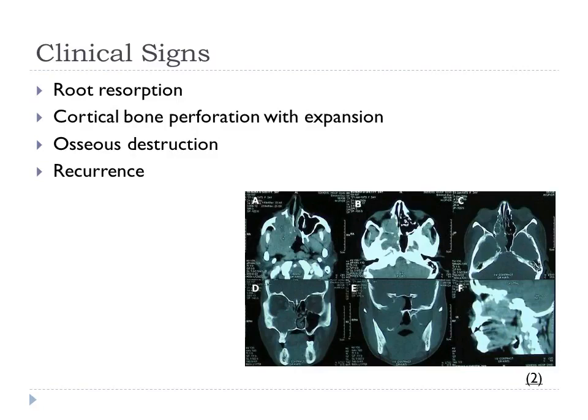When palpating regions of this disease, it can also be tender. Figures A, B, and C show the lesion expanding and destroying the antrum and extending into the sinuses. B and E show the destruction of the floor of the orbit, palate, and extension into the nasal cavity. S shows the destruction of the base of the skull.